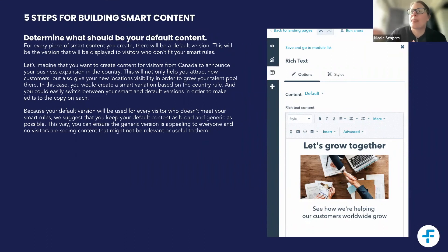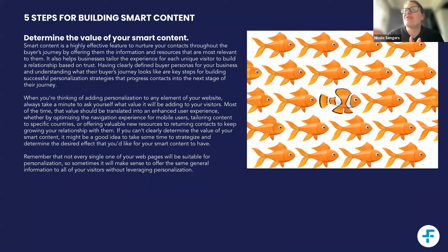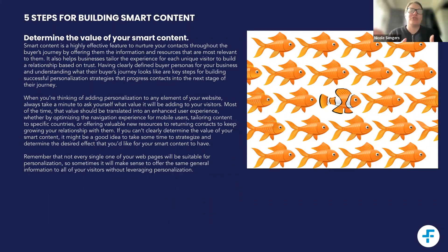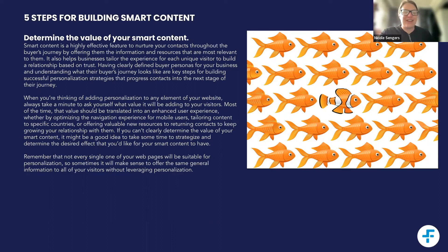The next thing you need to do is determine the value of your smart content. Looking at personalization elements, ask: are they going to add real value to this experience? Is making this change actually going to improve the user experience? Don't just make everything smart — look at the resources you have. You don't have time to make every single module on the landing page or in an email smart. So where can you add the most value? Would changing the image in the header to be relevant to the product — is the juice worth the squeeze?